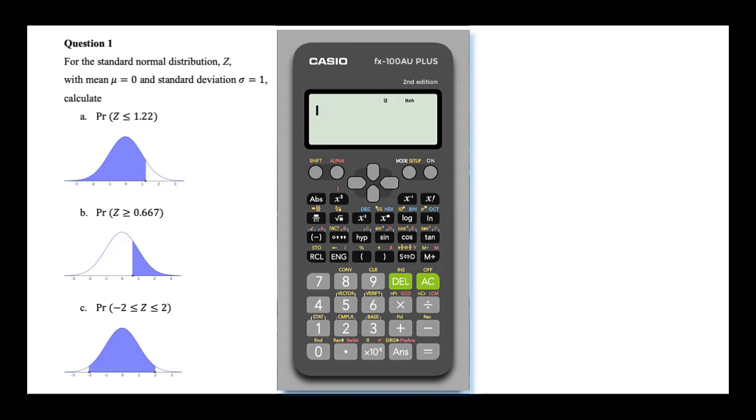Using the Casio FX100AU+, probabilities associated with the standard normal or Z distribution can be calculated. To perform such calculations, first set your FX100AU+ to statistics mode by pressing mode and then choosing 3 for stat. Then press AC.